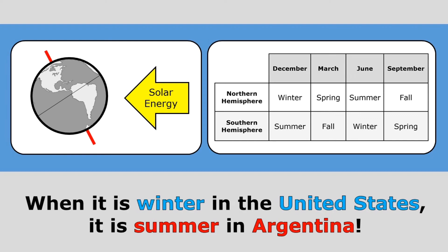It's very important to remember that seasons are caused by the tilt of the earth and not our distance from the sun. The United States is above the equator in the Northern Hemisphere, and when this part of the earth is tilted away from the sun, we experience winter. But the Southern Hemisphere below the equator is tilted toward the sun, so countries like Argentina would be experiencing summer. When it is winter in the United States, it is summer in Argentina. Every part of the world experiences the same pattern of seasons — winter, spring, summer, and fall — but they happen at opposite times of the year in the Northern and Southern Hemispheres. This shows that seasons are caused by the tilt of the earth and not how far we are from the sun.